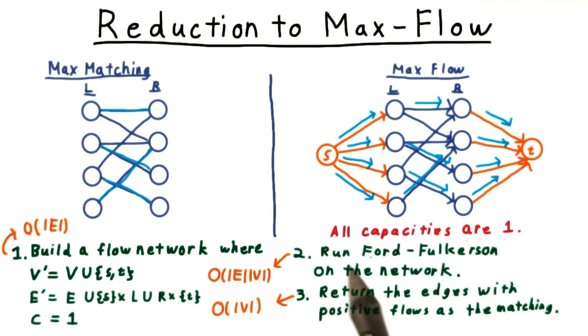Clearly, Ford-Fulkerson is the dominant part, and we end up with an algorithm that is order E times V.